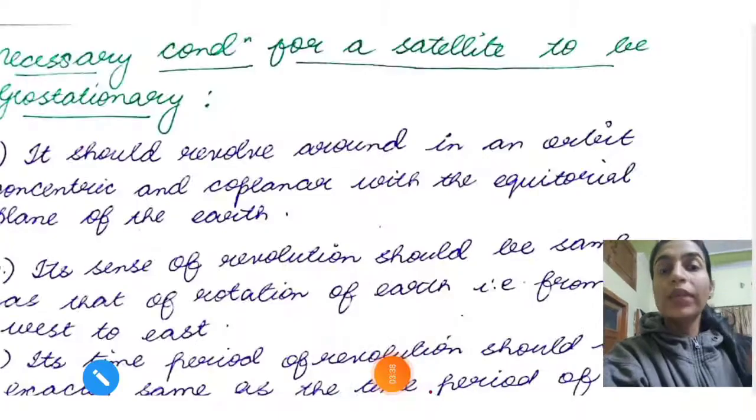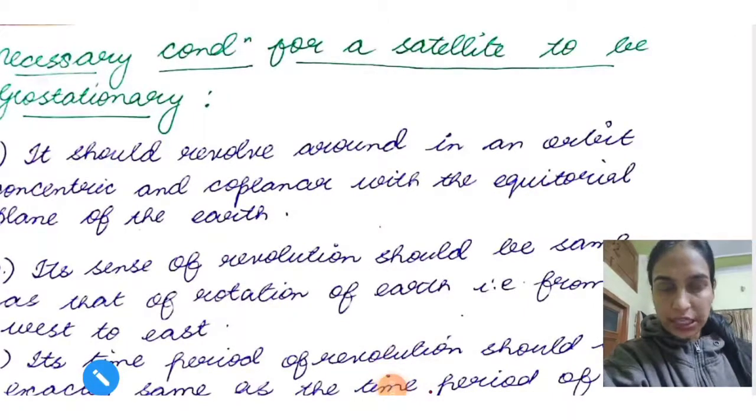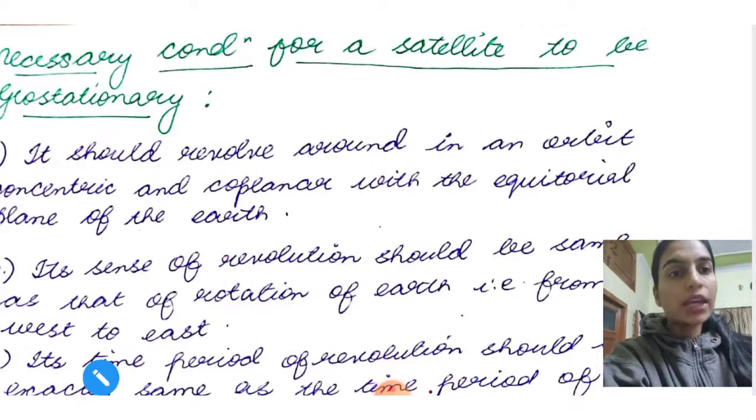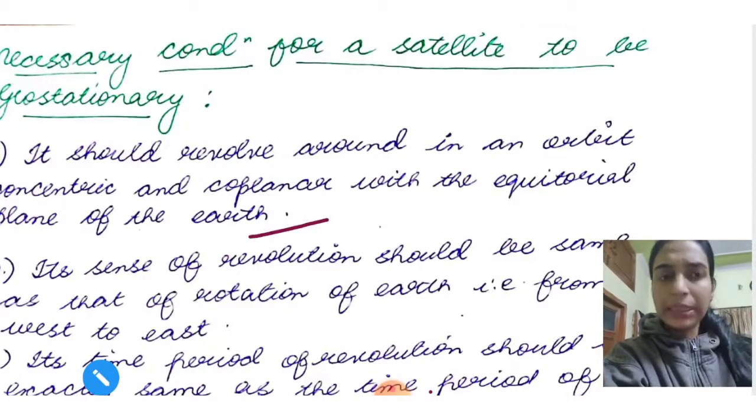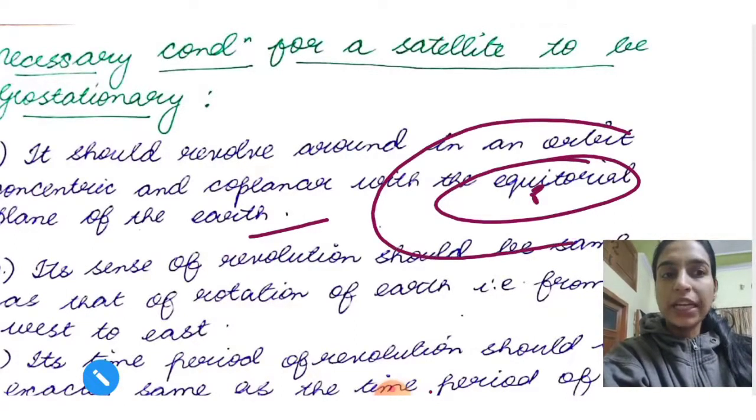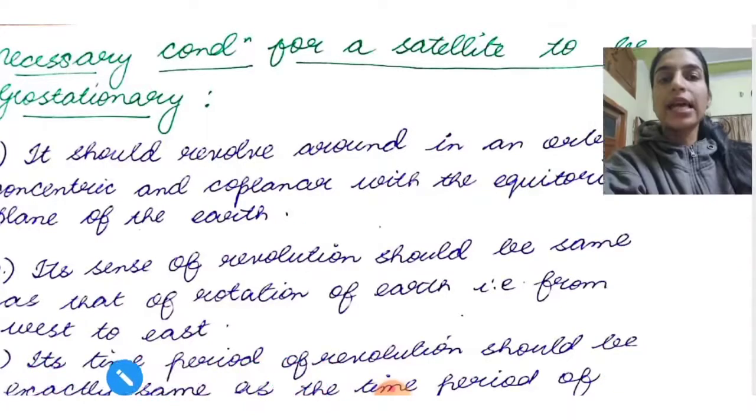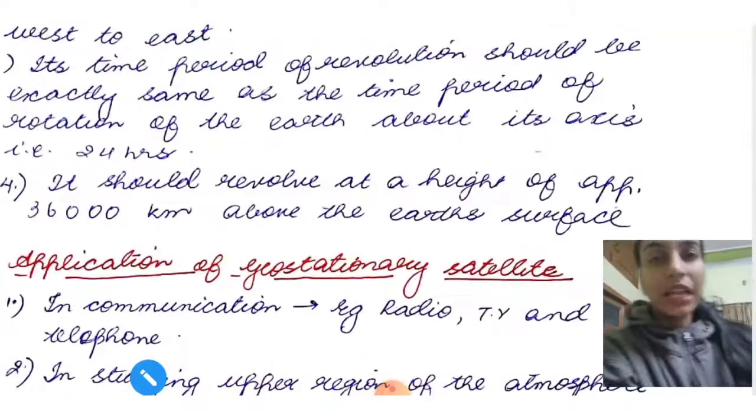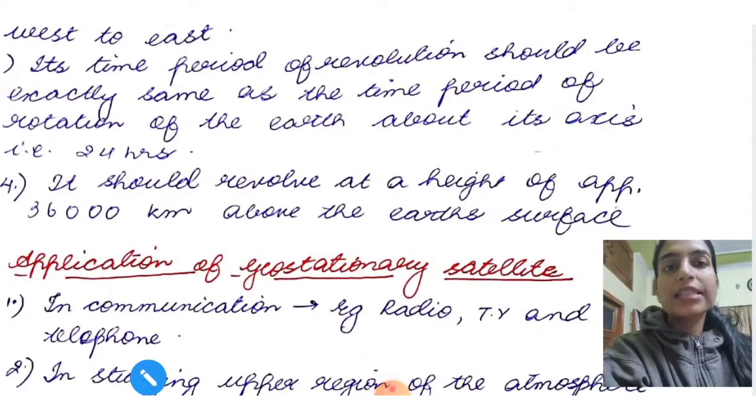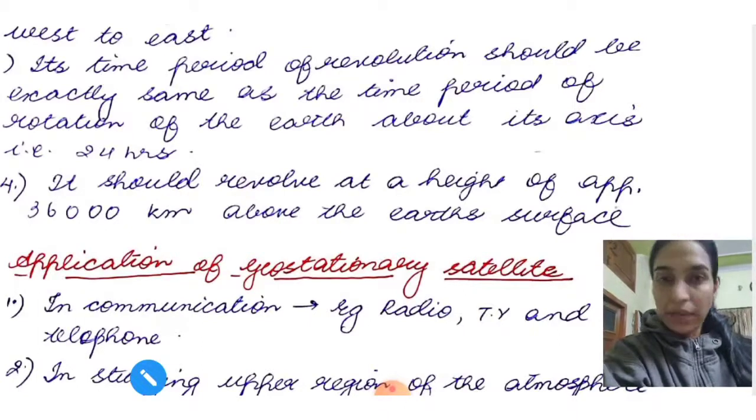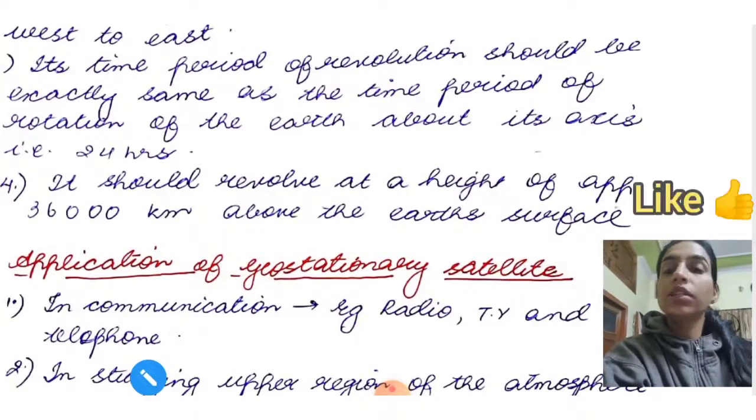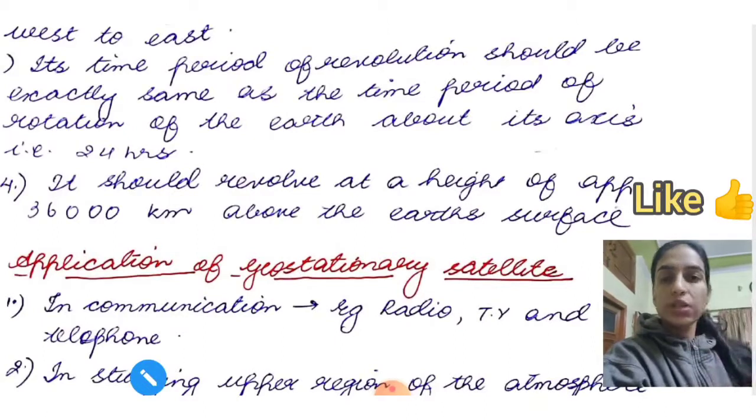Co-centric and co-planar with the equatorial plane of the earth. Co-centric means the same center of the orbit and it should be in the same plane as that of the equator. Next is the sense of revolution should be same as that of the rotation of the earth, that is from west to east. Its time period of revolution should be exactly same as the time period of rotation of the earth about its axis, that is 24 hours. And it should revolve with the height of approximately 36,000 kilometers above the earth surface. So this was about the geostationary satellites.